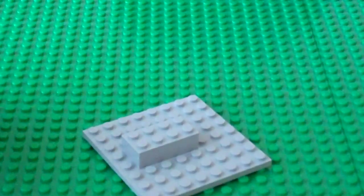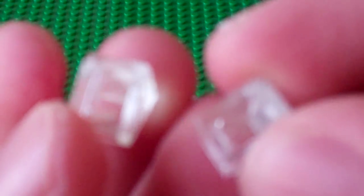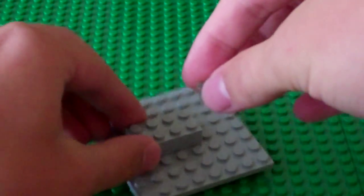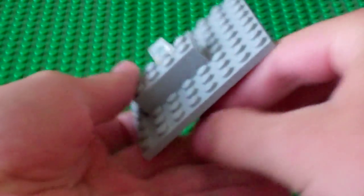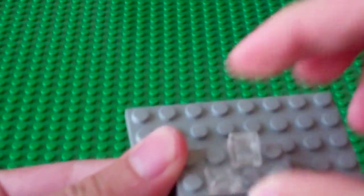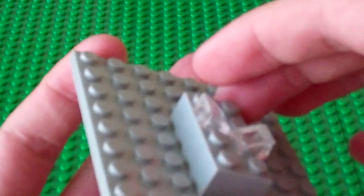Then I'm going to get 2 see-through clear cheese slopes. And I'm going to put the 2 of them on like so. And those will be the windows of the butchery.